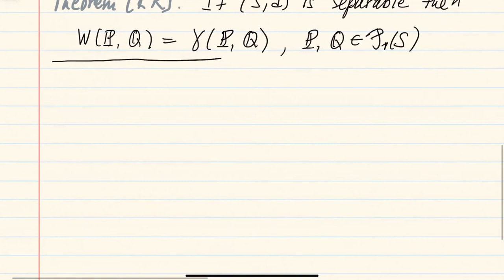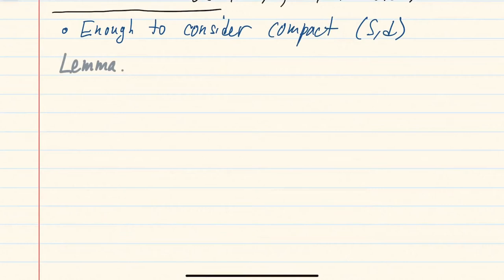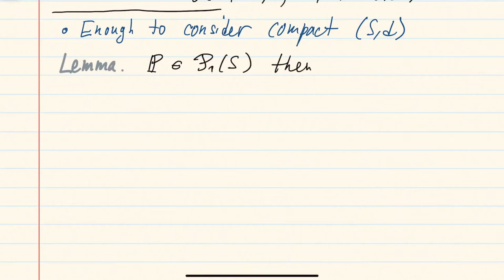It is enough to prove this theorem in the case when the metric space is compact. The reason is the following lemma: when our metric space is separable, if p is in P1 so that the distance is integrable, then you can approximate it by probability measures concentrated on finite sets with respect to the Wasserstein distance, and as a result also with respect to gamma.